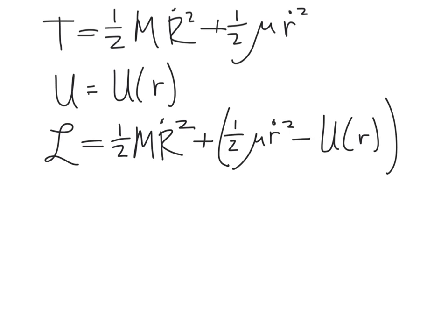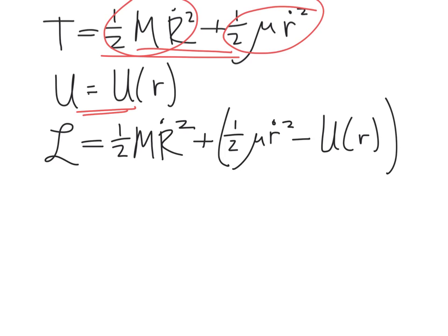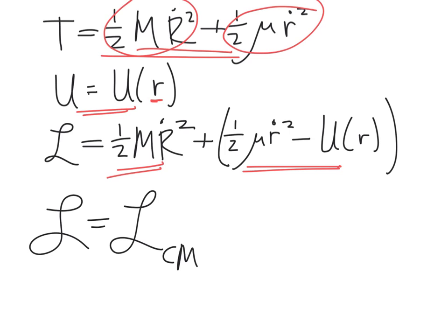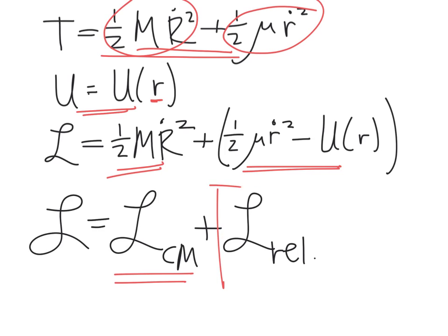To sum up, our kinetic energy has one term having to do with motion of the center of mass, and another term having to do with relative motion of the two masses with respect to one another. Then of course we have a potential energy, which corresponds to a central force — so it only depends upon the radial displacement between the two masses, not on their actual positions. When we write the Lagrangian, we get three terms. One term again having to do with motion of the center of mass, and a second term which is really the motion within the system. As we'll find in the next chapter, the center of mass term doesn't contribute to the dynamics within the system, so the only term that contributes anything interesting to the dynamics will be the relative motion term.